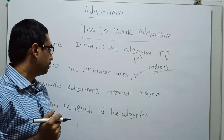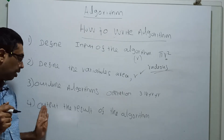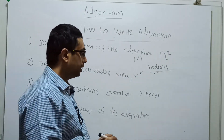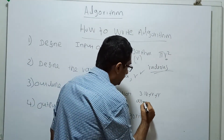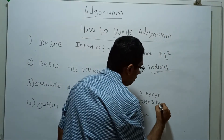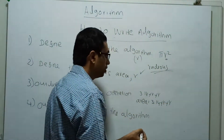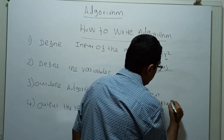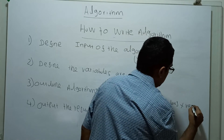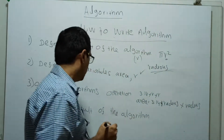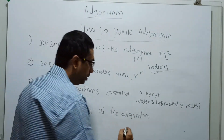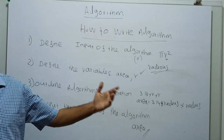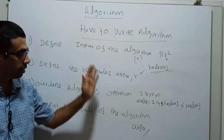The fourth step is to output the result of the algorithm. First, calculate the operation: area = 3.14 × radius × radius. Then output the result — 'area' is the variable that holds the output, so you write it as the output of the algorithm.